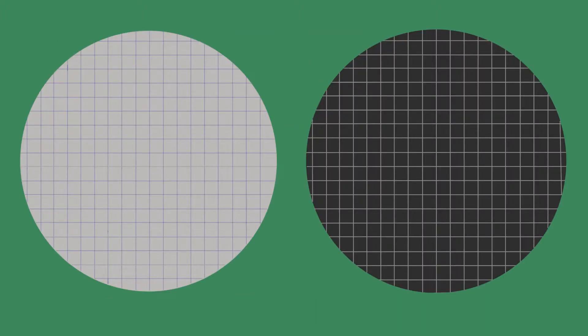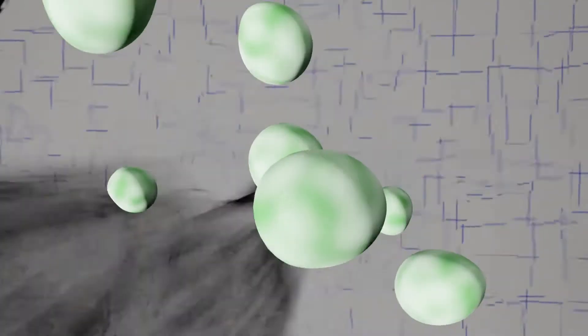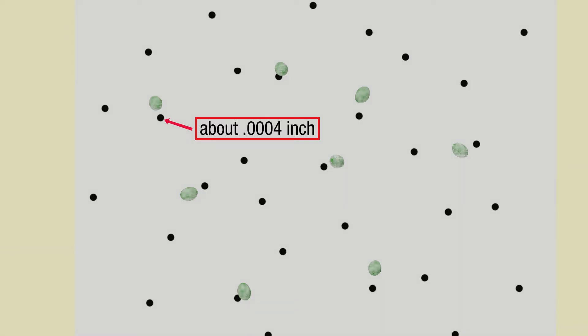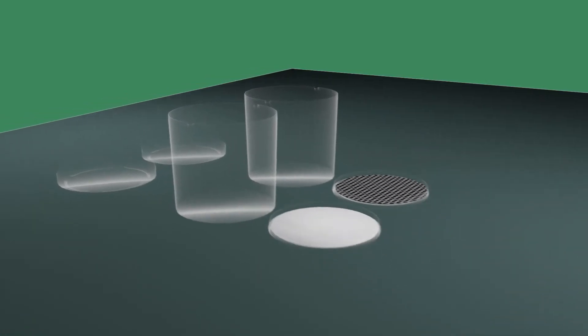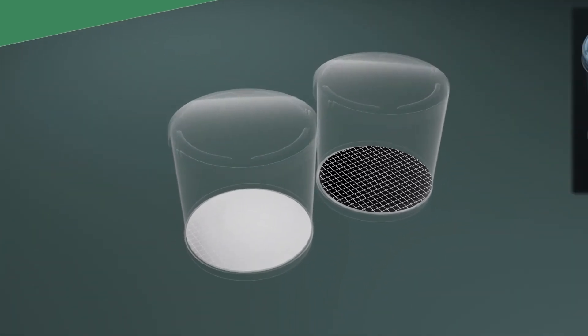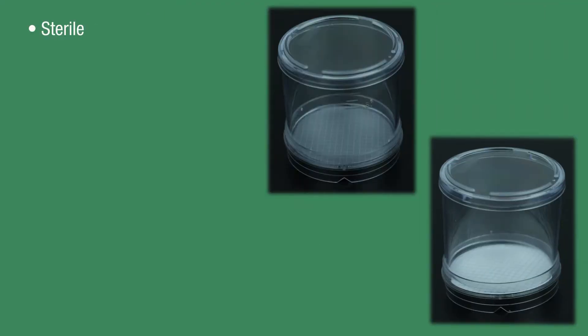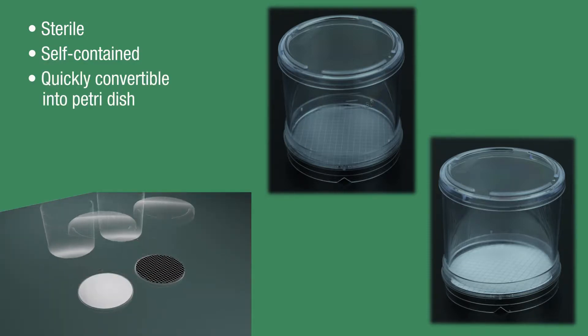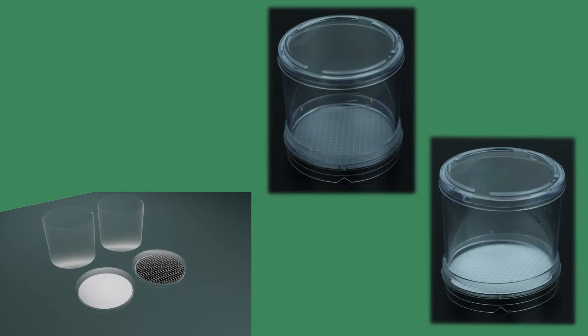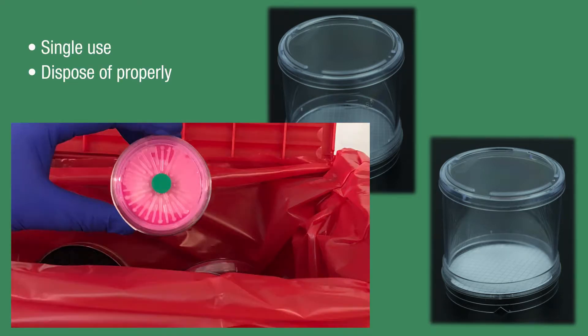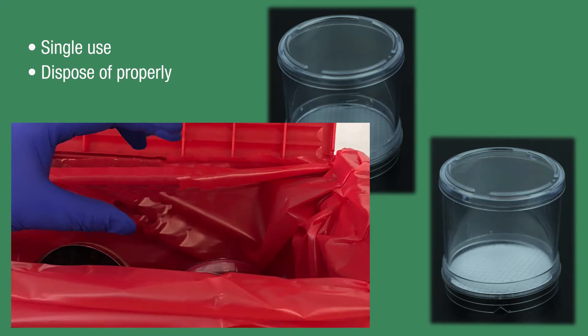Neogen offers both white and black membrane varieties for ease of reading results. Both colored membranes have a 0.45 micron pore size and are incorporated into units, sometimes referred to as monitors, with a 100 milliliter capacity. Neogen filter units are sterile, self-contained, and can quickly be converted into a petri dish for incubation. Filter units are single-use and should be disposed of using proper biohazardous waste procedures after testing is complete.